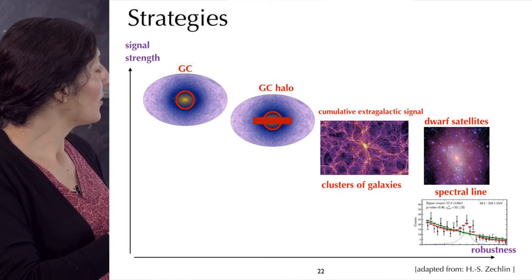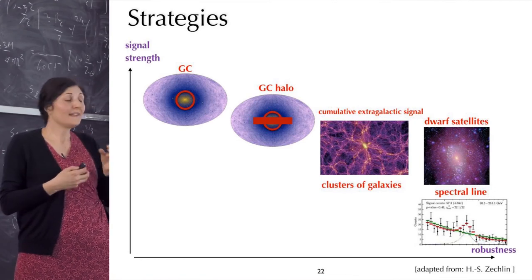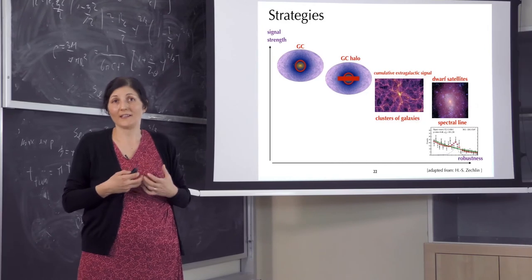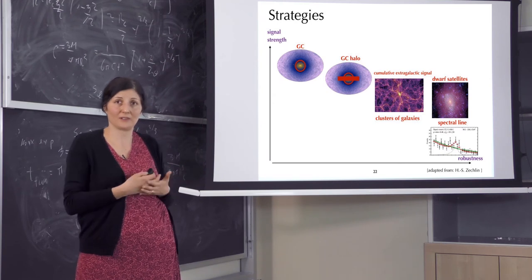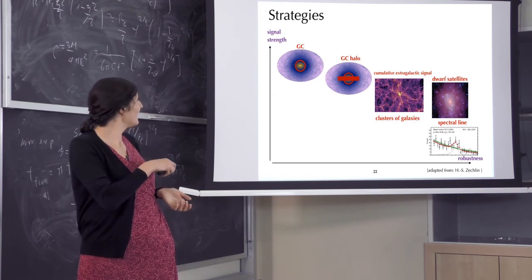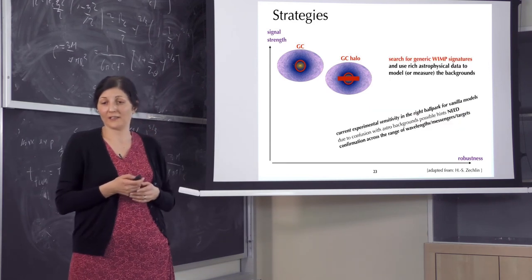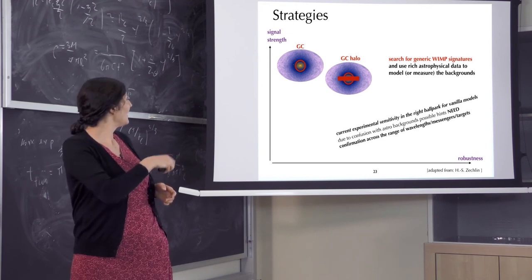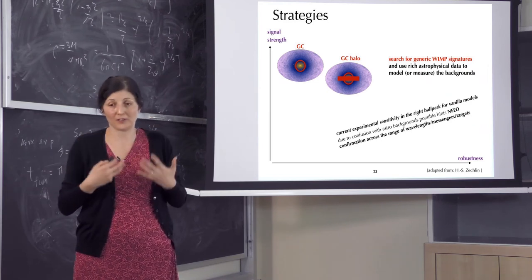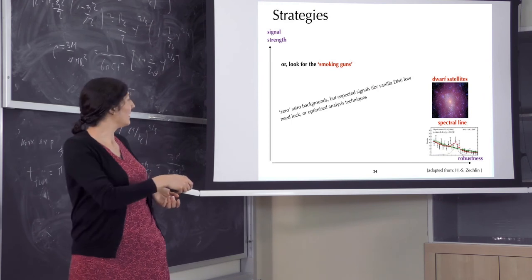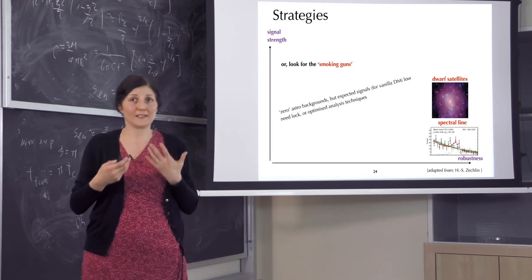On the other end of things are so-called dwarf spheroidal galaxies. These are satellite galaxies of our Milky Way and they are tiny, so they do not have lots of astrophysics. Therefore the dark matter signal from them would be very robust. There are no gamma rays expected from there except for dark matter but the expected signal strength is lower. So it is a trade-off. Basically what people do is to either focus on this high signal, low robustness target, but for that we have to know astrophysics very well and model it very well, or to focus on targets where you have zero backgrounds but expected signals are low so you have to do fancy things in statistical analysis.